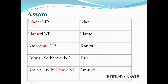Next we are going to see about Assam. The Assam state national parks are: Manas National Park, Nameri National Park, Kaziranga National Park, Dibru-Saikhowa National Park, and Rajiv Gandhi Orang National Park. I created a new code word from these parks.